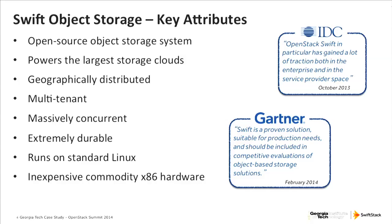OpenStack Swift is an object storage system. What that means is that you put data in and out of the system via an object API. In Swift's case, that means it's over HTTP — you GET, POST, and PUT data into it. It's not a file system; that's the way you interface with it.